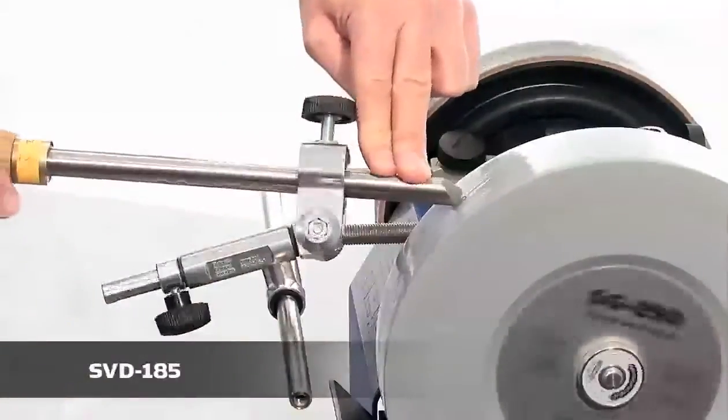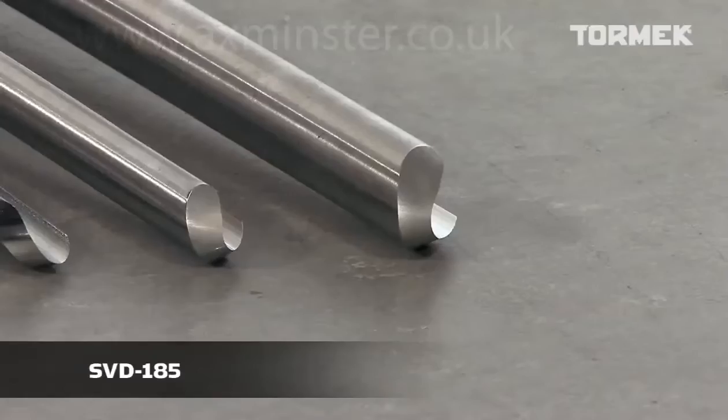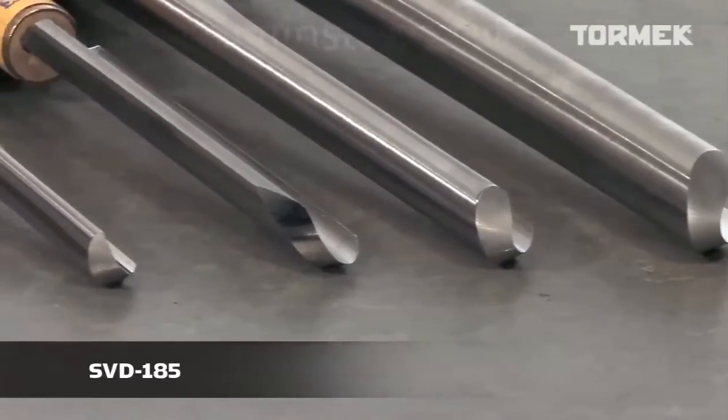With the Tormek Jig for Gouges, SVD185, you can sharpen fingernail-shaped turning gouges,